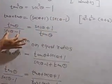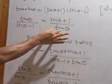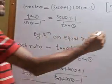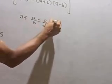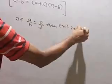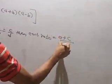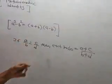So tan theta upon sec theta minus 1 equals sec theta plus 1 upon tan theta. Now we use the theorem on equal ratio from 9th standard: if a upon b equals c upon d, then each ratio equals the sum of numerators upon the sum of denominators.